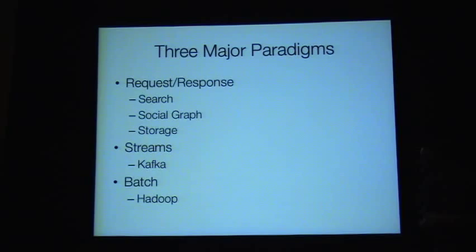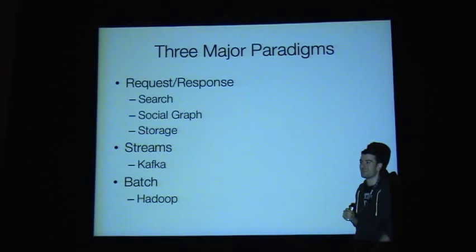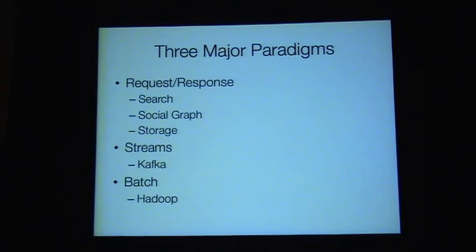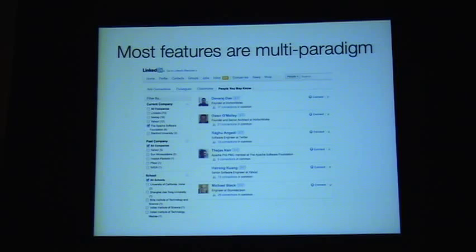Another way to break this down is by paradigm. There are really three paradigms: request-response, streams, and batch. Request-response are latency-oriented — someone is waiting, and your goal is something in the range of 5 to 100 milliseconds. Streams are kind of in between, as fast as you can. Batch is hourly. They have different metaphors for how data is viewed, different partitioning approaches, and a significant set of tradeoffs. The key point is that the infrastructure breaks down this way, but features themselves can make use of multiple paradigms.